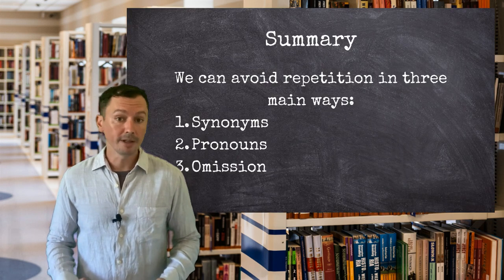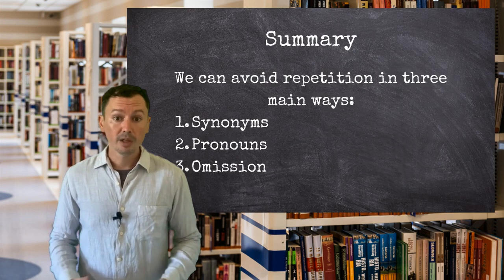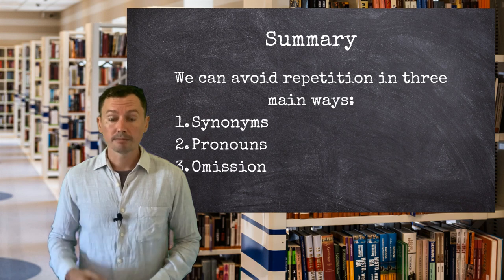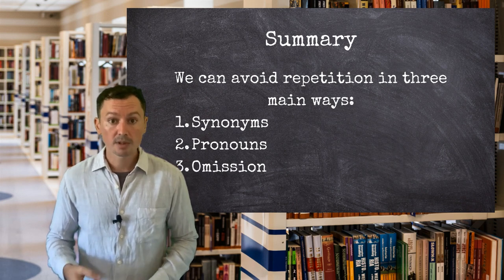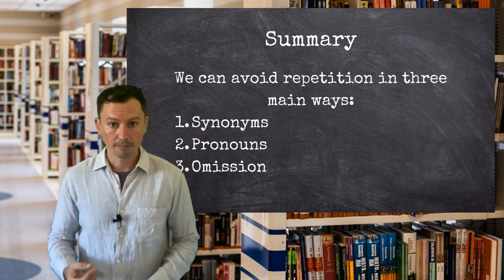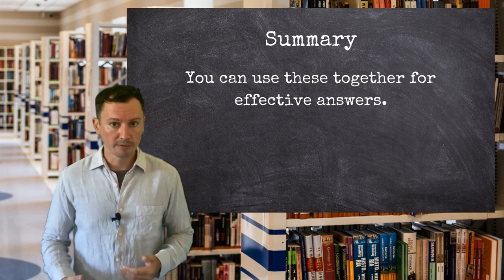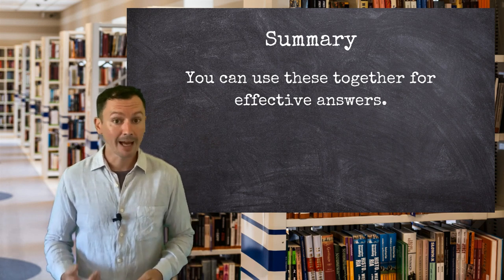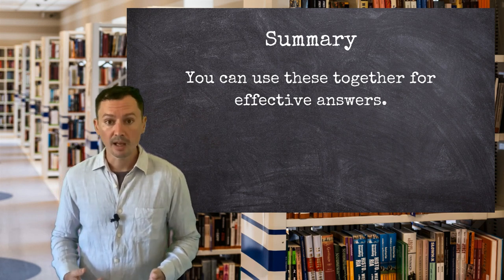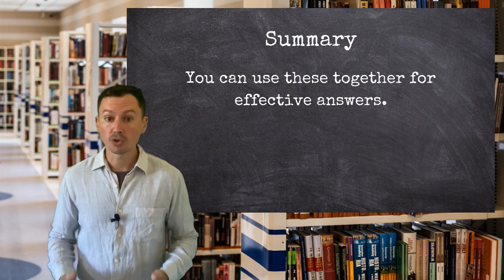As we have seen today, repetition is something to be avoided in IELTS writing. We can do this in three main ways: synonyms, pronouns, and omission. Ideally, a mixture of these will be used in order to create natural and sophisticated answers that avoid repeating the same words over and over. If you can blend these skills into your work in a way that does not confuse the reader, then you will be well on your way to a better IELTS writing score.